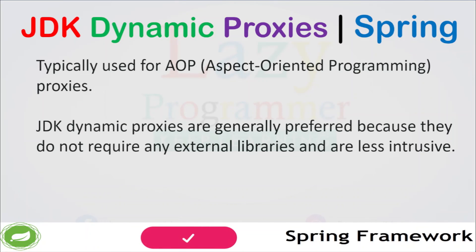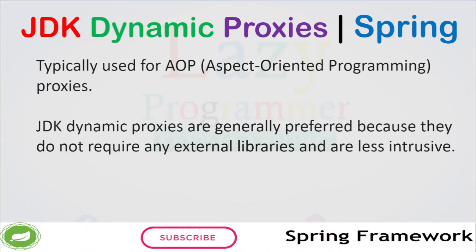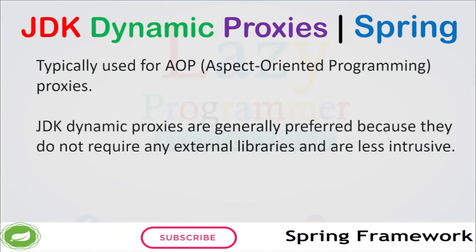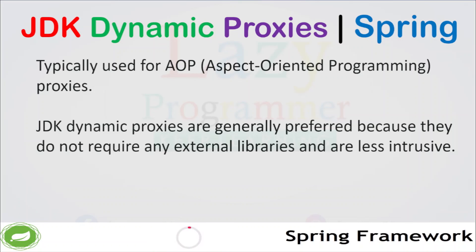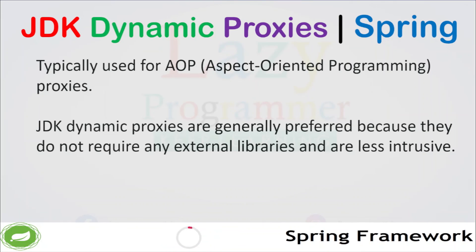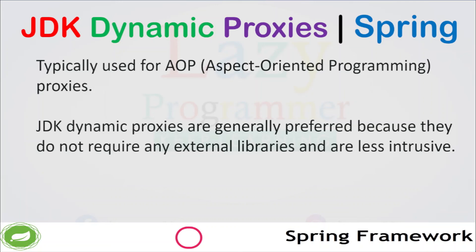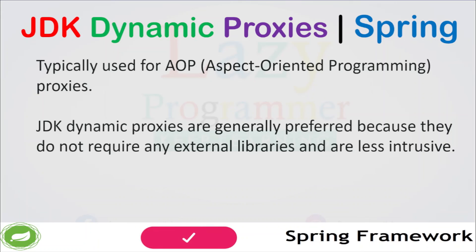In our upcoming sessions, we will also see AOP in detail, because it is a very important concept in Spring Framework. Spring uses AOP to apply cross-cutting concerns to classes at runtime. For example, Spring can use AOP to log method calls on a specific class — we can define aspects and join points so that some operation is performed before or after a particular method call. JDK dynamic proxies are generally preferred because they do not require any external libraries and are less intrusive in nature.